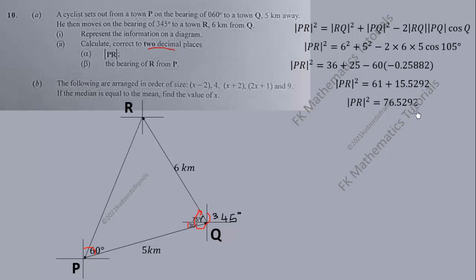Now let's take the positive square root of both sides since we are dealing with length. That will give us |PR| to be equal to 8.748097. Don't forget the requirement says two decimal places, so that will give us 8.75 kilometers since we have to round up.